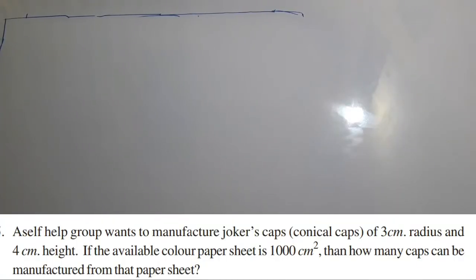Hi my dear friends, question number 5 from exercise 10.1 on mensuration. Here is the question: A self-help group wants to manufacture joker's caps of 3 centimeter radius and 4 centimeter height. If the available color paper sheet is 1000 square centimeters, then how many caps can be manufactured from that paper sheet?